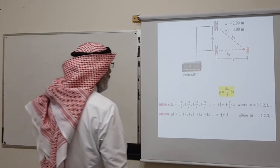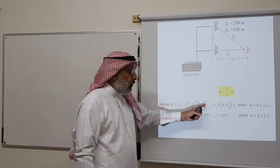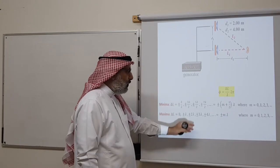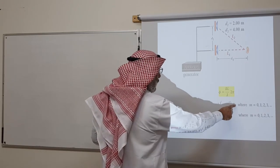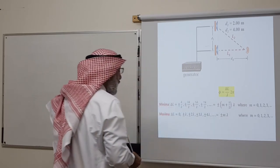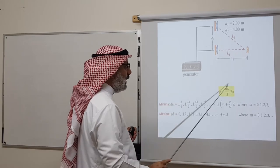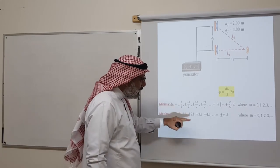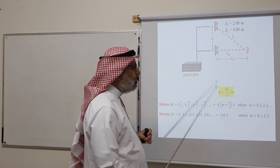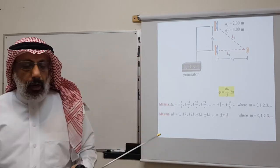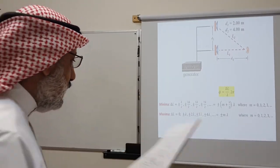Minima or destructive interference occur when delta-L equals an odd multiple of lambda/2: lambda/2, 3lambda/2, 5lambda/2, and so on, compactly written as (m + 1/2) times lambda, where m is an integer. Maxima or constructive interference occur when delta-L equals an integral multiple of lambda: 0, lambda, 2lambda, 3lambda, written as M times lambda. We use these equations to find the frequencies giving minima and maxima.